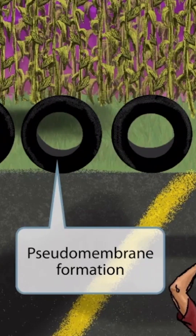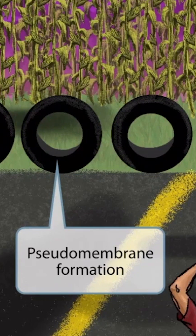Notice that we've included some tires in the background, just like we did in our C. diff image. The tires are circular and resemble the cell membrane — you could say they're kind of like a membrane, but not quite. So, pseudomembranes. These should help you remember that a pseudomembrane is classically seen in the pharynx on physical examination.